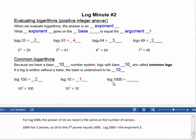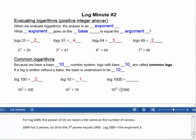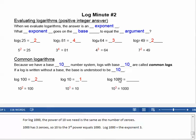For log 1,000, the power of 10 we need is the same as the number of zeros. A thousand has three zeros, so 10 to the third power equals 1,000. Log of 1,000 equals the exponent 3.